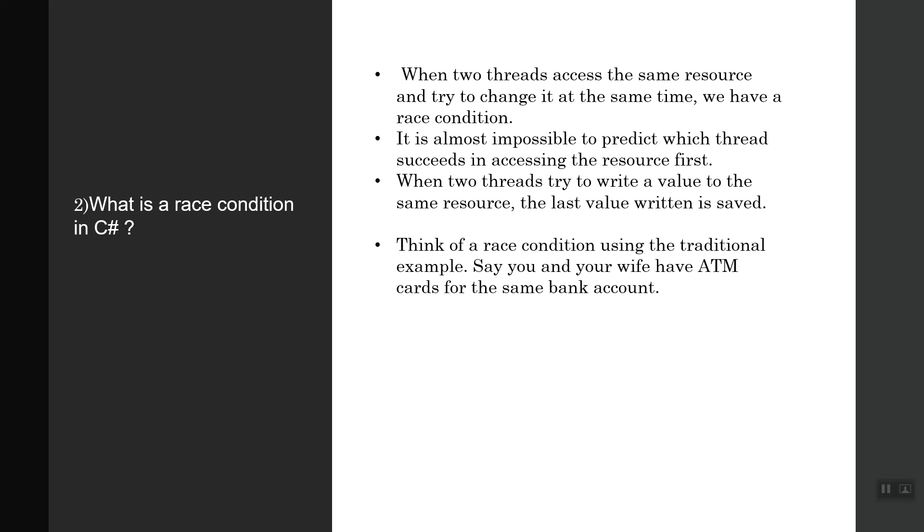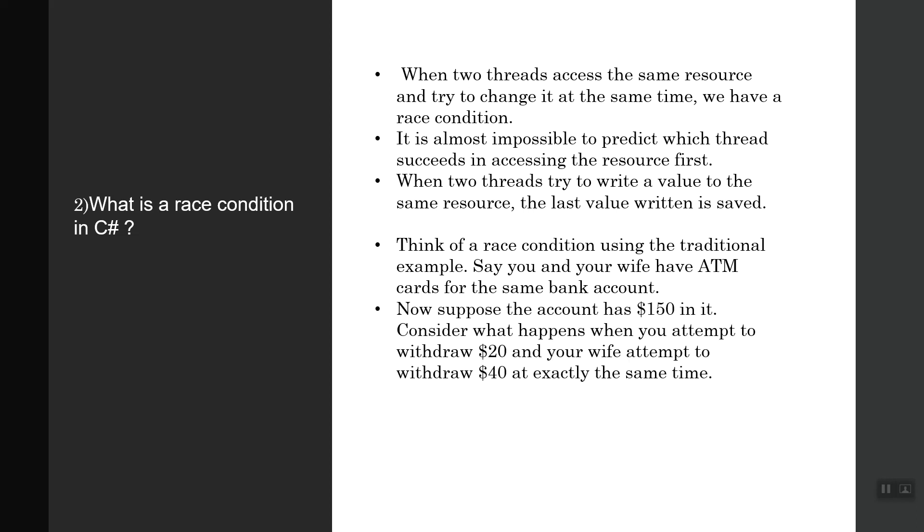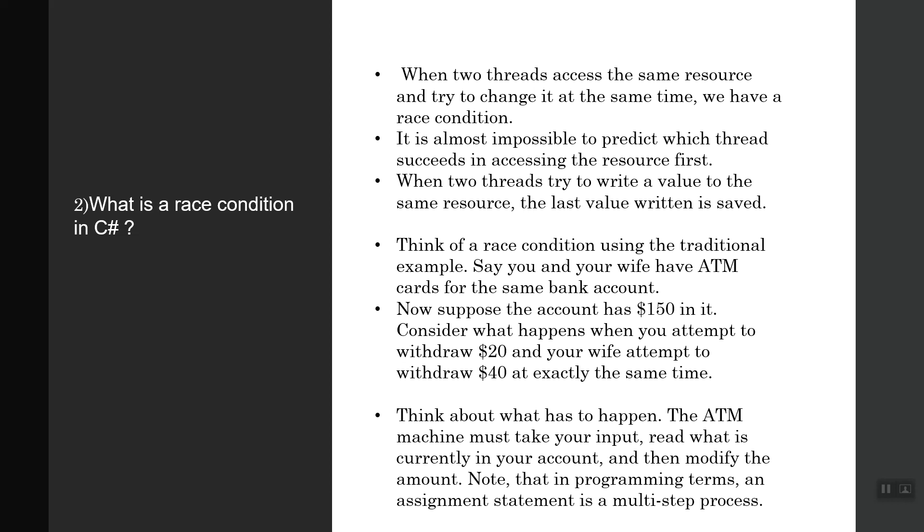Think of a race condition using a traditional example. You and your wife have ATM cards for the same bank account. Suppose the account has $150 in it. Consider what happens when you attempt to withdraw $20 and your wife attempts to withdraw $40 exactly at the same time. The ATM machine must take your input, read what is currently in your account and then modify the amount. Notice that in programming terms an assignment statement is a multi-step process.